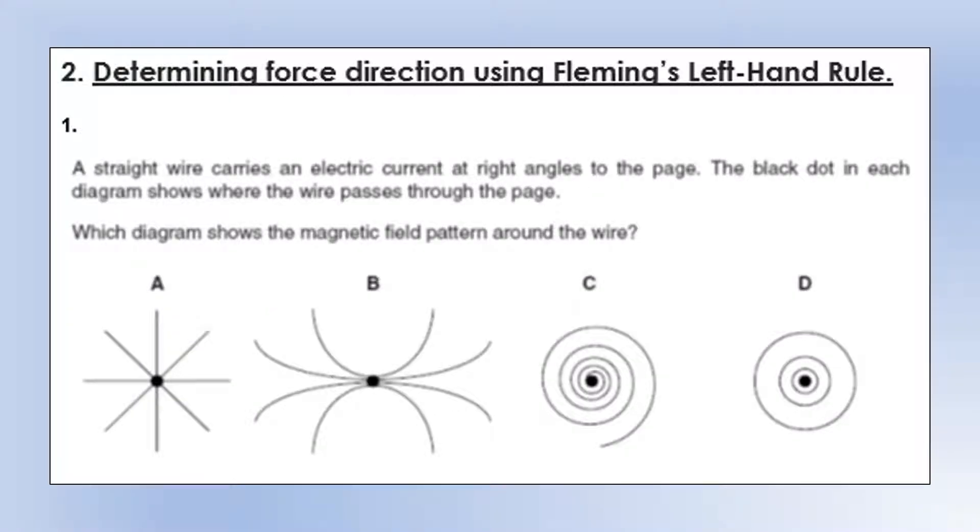In this video we're going to look at some questions where we have to apply Fleming's left-hand rule. So to start off, a straight wire carries an electric current at right angles to the page. The black dot in each diagram shows where the wire passes through the page. So the wires are all going into the plane of the page.